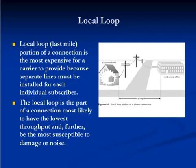The local loop, or the last mile as it is often called, is the connection between a subscriber and the nearest central office. The original local loops were all copper wiring, and although most are still made of copper, they may also be fiber optic or wireless. Local loops are supplied by local exchange carriers. Though they are the most expensive part of the public network, they are also the place where the most money stands to be made because they are the link to the customer. The local loop is the most expensive for a carrier to provide because separate lines must be installed for each individual subscriber, and it is the part of the connection most likely to have the lowest throughput and be the most susceptible to damage or noise.